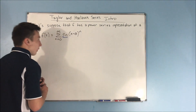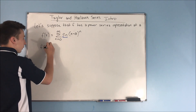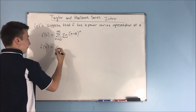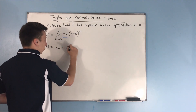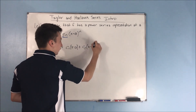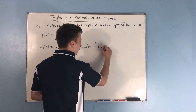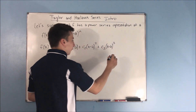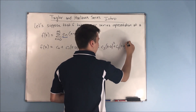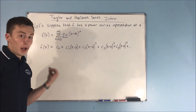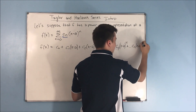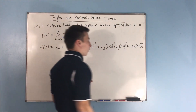Let's write our terms out. f of x is equal to c sub 0, plus c sub 1 times x minus a, plus c sub 2 times x minus a squared, plus c sub 3 times x minus a to the third power, plus c sub 4 times x minus a to the fourth power. And we also want to note our nth term: c sub n times x minus a to the nth power, and we go on and on.